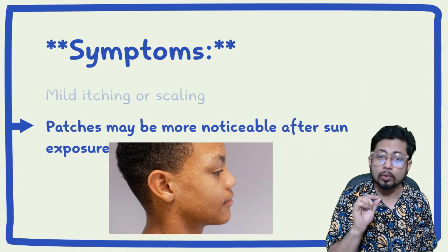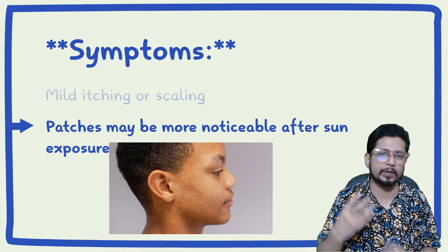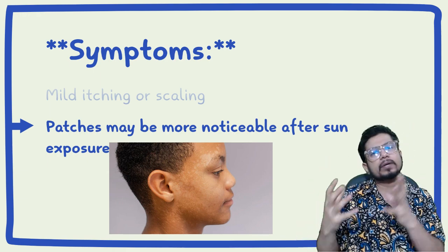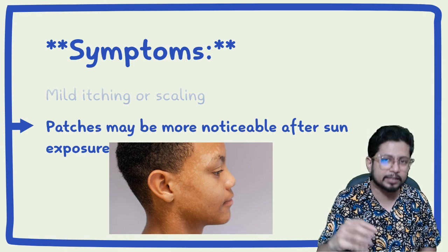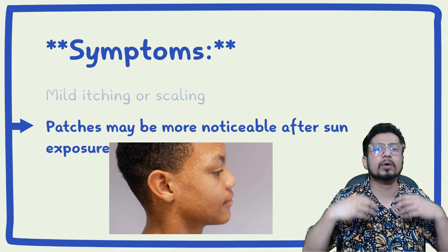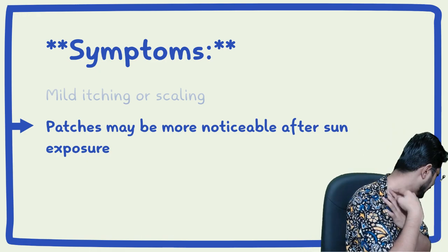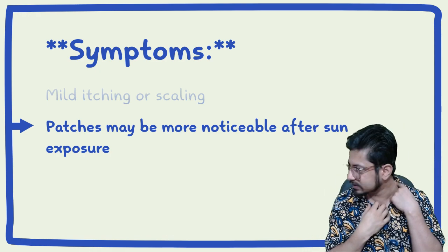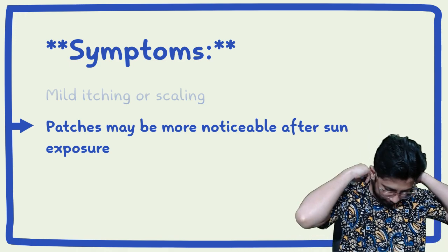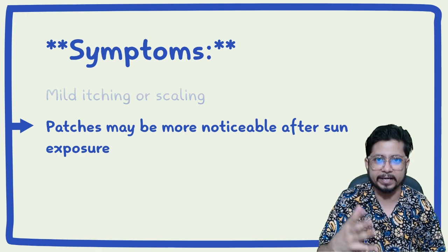Patches may be more noticeable after sun exposure. This disease expands when that part of the skin is exposed to the sun — the moment you expose that area to sunlight, you can clearly see the infection becoming more prominent. This is why you should use a collar to protect those areas, particularly the neck, from sunlight to prevent the spread.